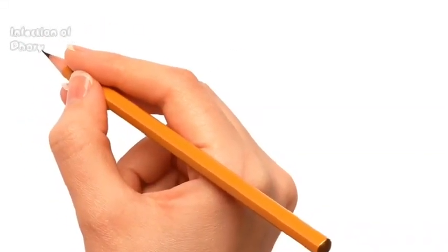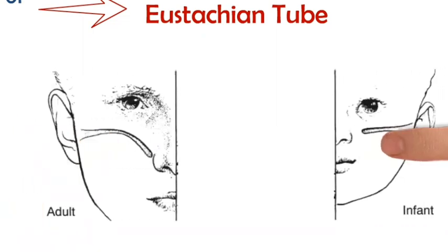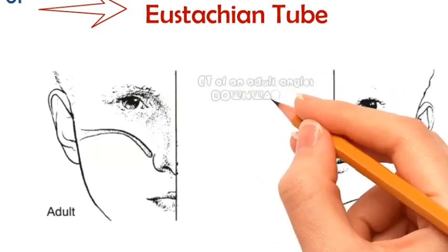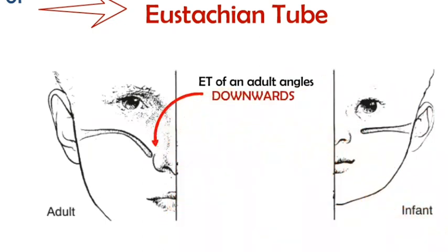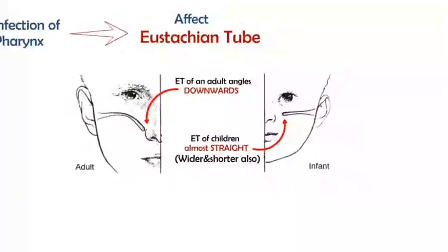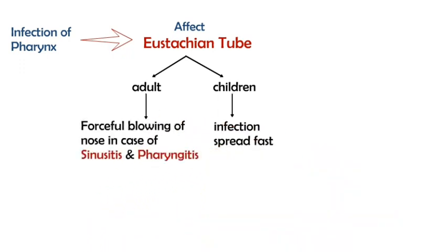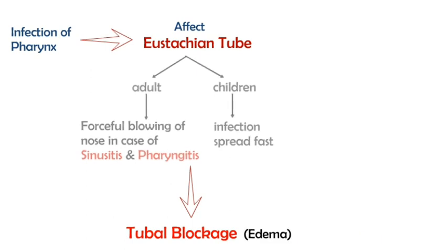The disease usually starts with infection of the pharynx, which may lead to edema and hyperemia of the eustachian tube. The eustachian tube of an adult angles downwards, whereas in a child it is almost straight and wider and shorter than in adults. Hence, the infection spreads faster in children than in adults. In adults, forceful blowing of the nose while having sinusitis or pharyngitis can lead to spread of infection.